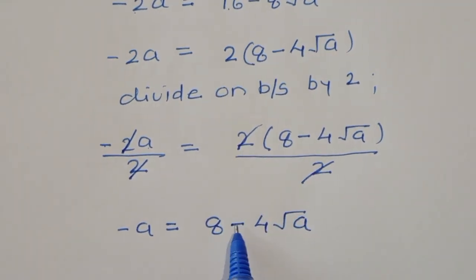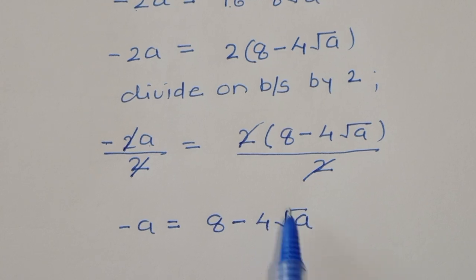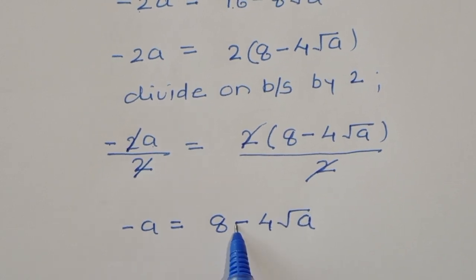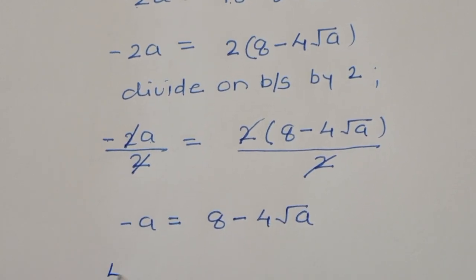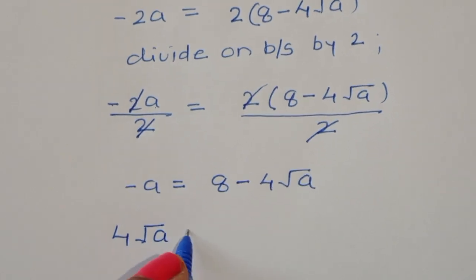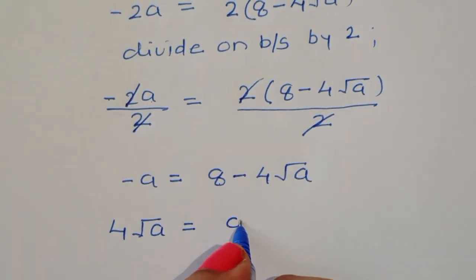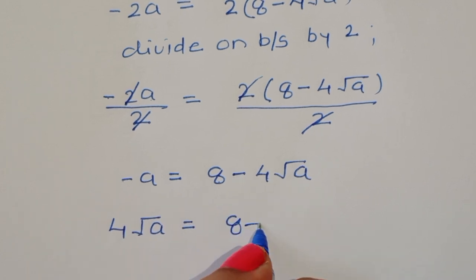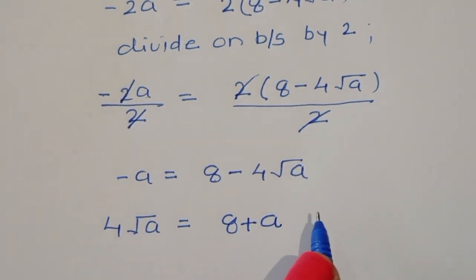Now −4√a comes to the LHS and becomes positive. So 4√a = 8 + a.